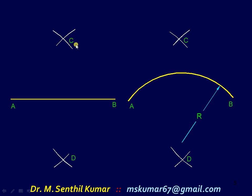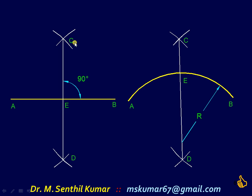For both the line as well as the arc, now draw a line joining C and D. That will intercept the line AB at E. Now AE is equal to EB, which is exactly equal to half of AB. That holds good even for the arc AB also. Thank you.